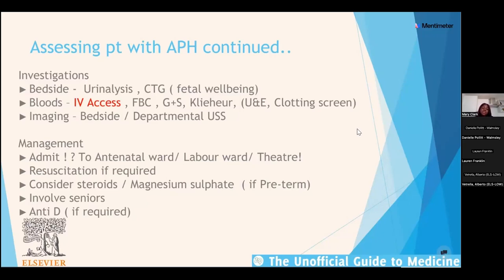Management: always admit the patient — even if only a small amount of fresh bleeding is seen on speculum. Decide whether she goes to the antenatal ward, labour ward, or needs urgent delivery in theatre. Resuscitate if required. If she is preterm and may need delivery, consider steroids for fetal lung maturation and magnesium sulphate for neuroprotection (for babies less than 33 weeks, to reduce risk of cerebral palsy). Involve seniors. If she is rhesus negative and has had vaginal bleeding or abdominal trauma, she needs anti-D — a sensitising event.